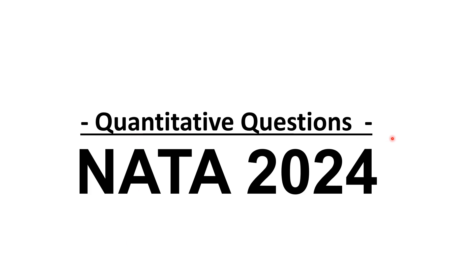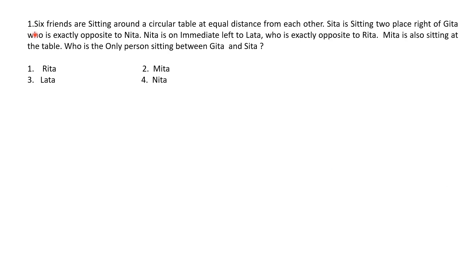Let us discuss the quantitative questions of Nata 2024. First question: six friends are sitting around a circular table at equal distance from each other. Sita is sitting two places right of Gita, who is exactly opposite to Nita. Nita is on the immediate left of Lata, who is exactly opposite to Rita. Meeta is also sitting at the table.